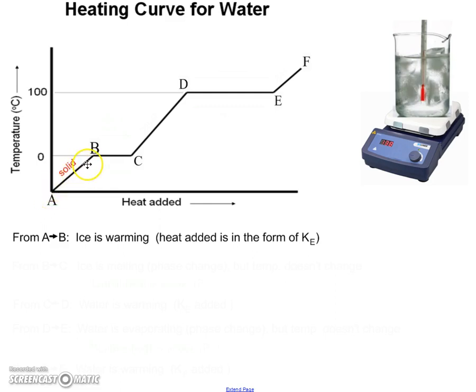So from point A to point B there's ice that's getting warmer. Because the temperature is going up that tells us the molecules are moving faster. And any time we're dealing with moving molecules we're dealing with kinetic energy. So the first chunk of heat that's getting added to this ice is in the form of kinetic energy.